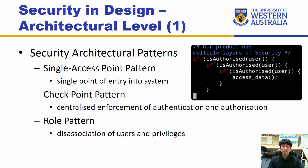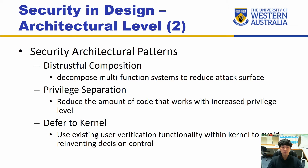Hello and welcome back. In this video we will be looking at secure application designs. We'll start with the architectural level first. At the architectural level, there are six main types of security patterns that you can apply: single access point, checkpoint pattern, role pattern, distrustful composition, privileged separation, and deferred kernel. We're going to look at each one in more detail using an example.